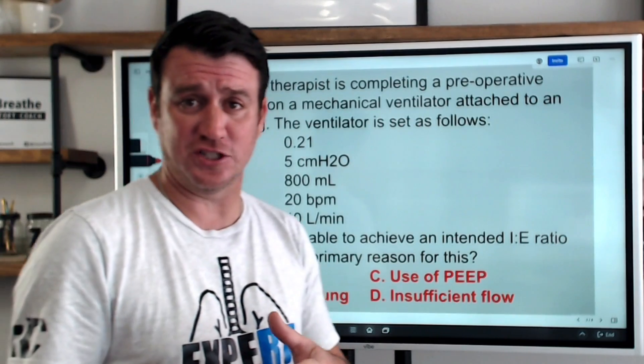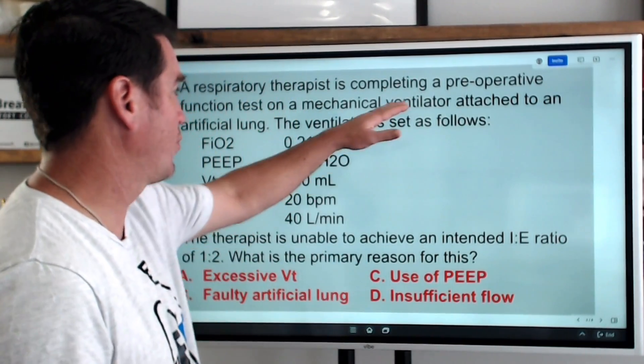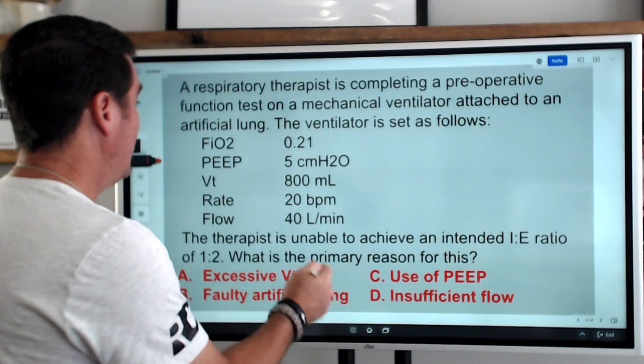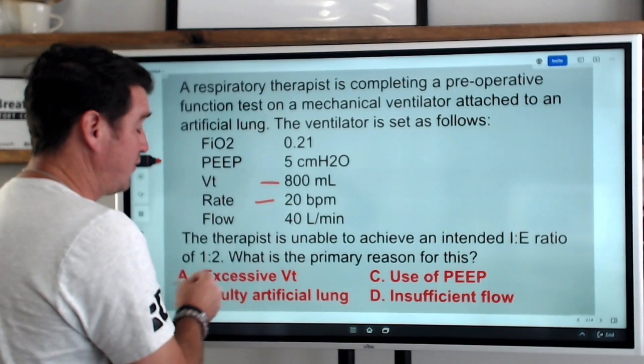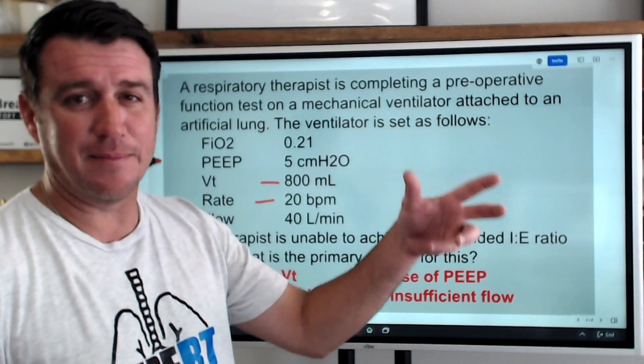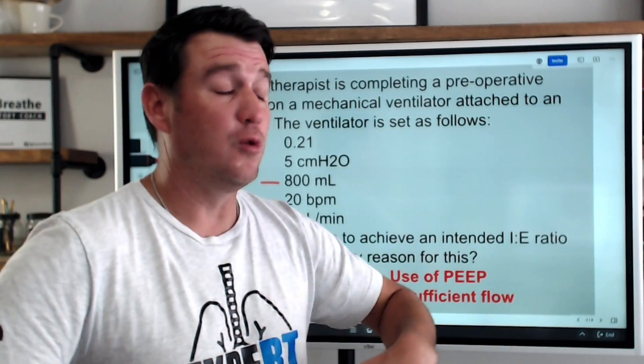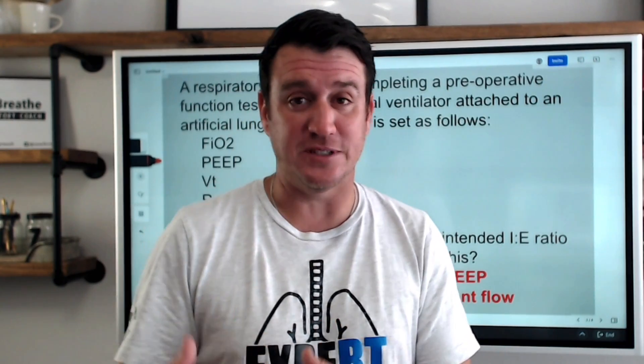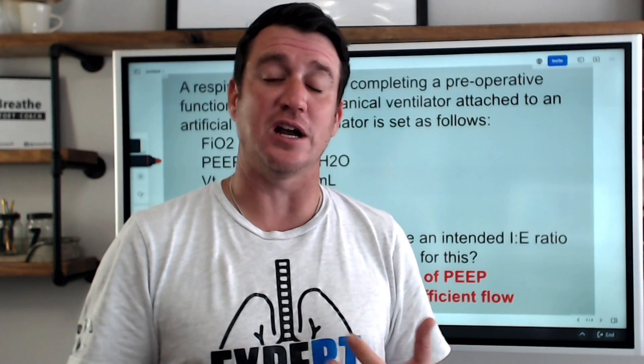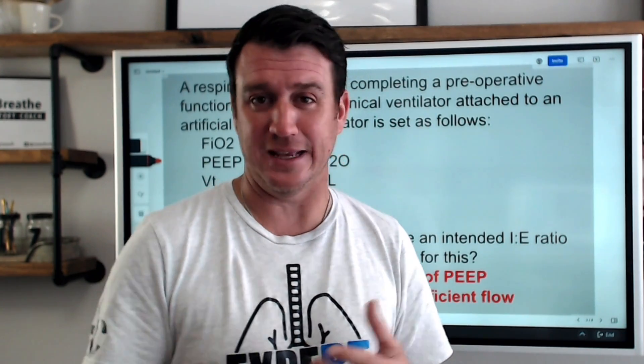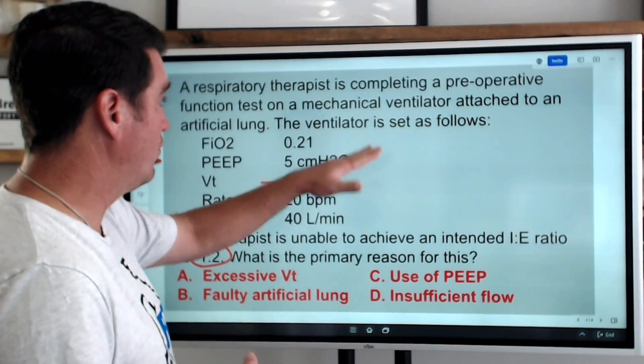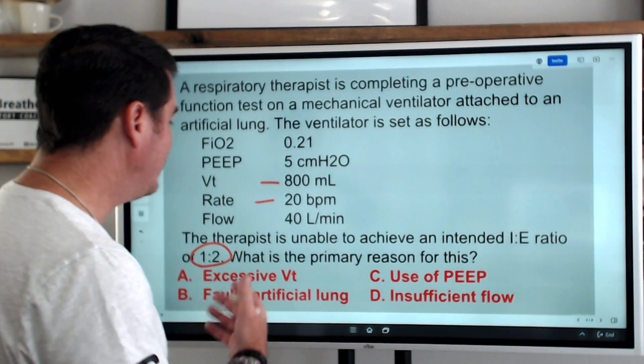When I look at this question, there's a couple things that jump out at me. First of all, I've never done a preoperative function test to test if the vent is going to give 800 mLs, rate of 20, and establish an I:E ratio of one to two. That sounds more like biomedical stuff to me but nonetheless, we do oftentimes perform system tests to make sure that the pressures are held, that there's no leaks, that the filters are not causing any type of flow impedance, and things like that. So we do perform preoperative tests. I just don't know if you've ever seen one or done one like this.